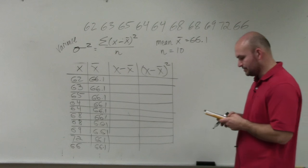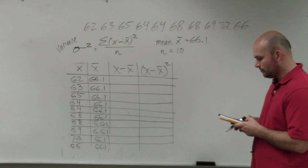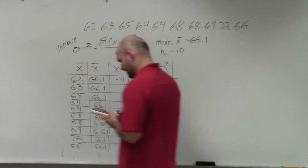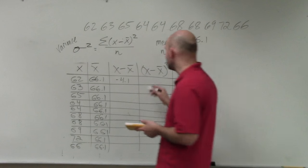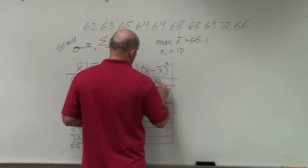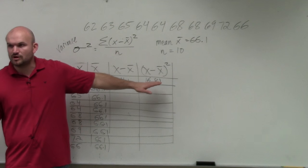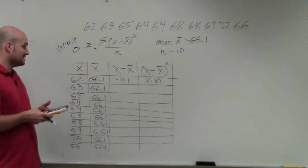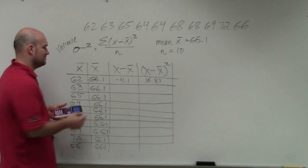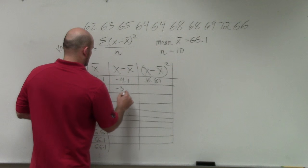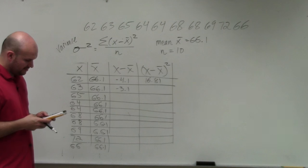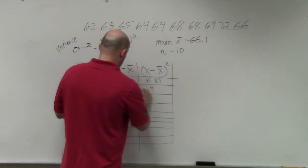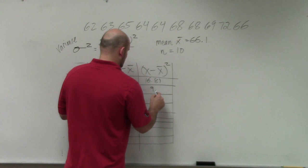So therefore, the first one, I'm just going to do 62 minus 66.1. I get negative 4.1. And then I just square that value. And I get 16.81. Does everybody understand how I completed the first row? Second row, now I just do 63 minus 66. So therefore, that's going to be negative 3.1. And I square that. And I get negative 9. I'm sorry, positive.